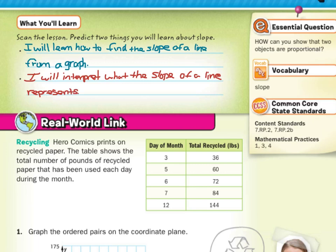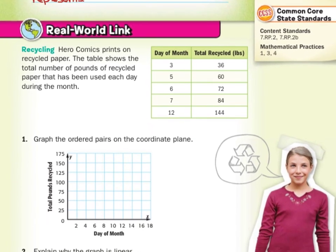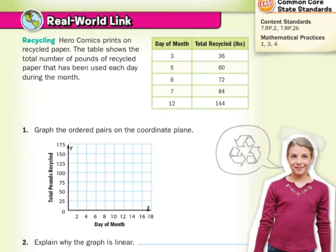Now for our real-world link. Hero Comics prints on recycled paper. Good for that. The table shows the total number of pounds of recycled paper that has been used each day during the month. So day 3, 36 pounds. Day 5, 60 pounds. Day 6, 72 pounds. 7, 84. 12, 144.